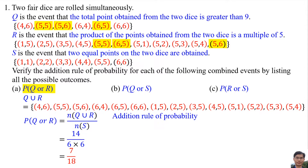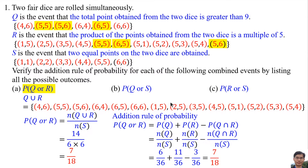Using the addition rule of probability: P(Q or R) = P(Q) + P(R) − P(Q ∩ R). P(Q) = 6/36, P(R) = 11/36, and P(Q ∩ R) = 3/36, since there are 3 common elements. So the probability is 6/36 + 11/36 − 3/36 = 14/36 = 7/18. Both methods give 7/18, so the addition rule of probability is verified.